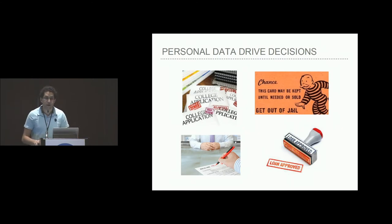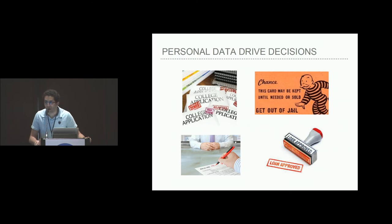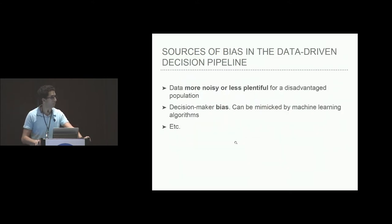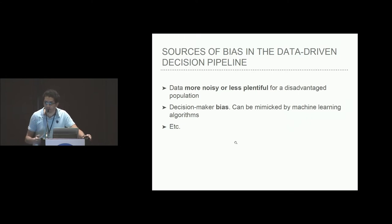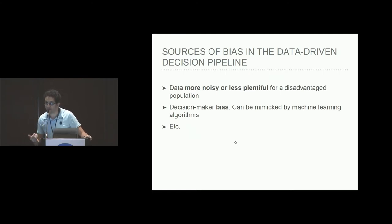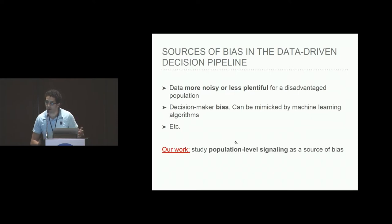As we all know, personal data drives a lot of the important decisions being made about individuals — you can think of bail decisions, loan approvals, and many other such examples. We know that bias is often introduced in those decisions, and many sources of bias have been identified: data may be noisier or less plentiful for disadvantaged populations, the decision maker may themselves be biased, a machine learning algorithm may mimic past bias, and there can be many other reasons for disparities between populations. In this talk, we want to study disparities in access to population-level signaling as a source of bias and inequalities.